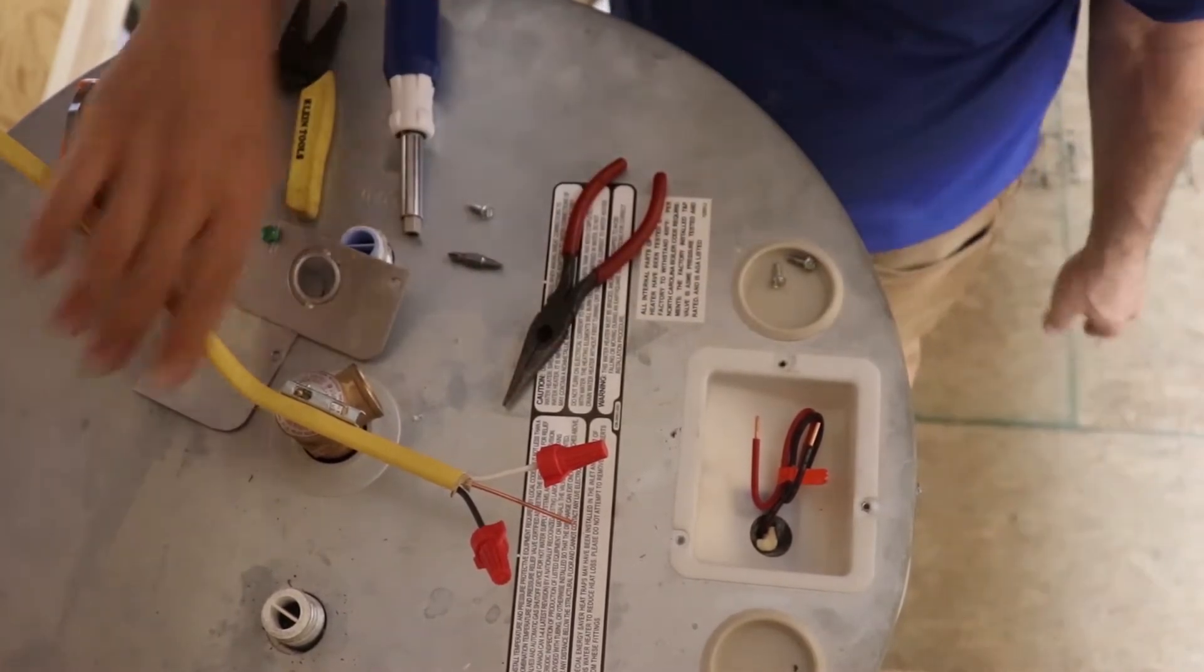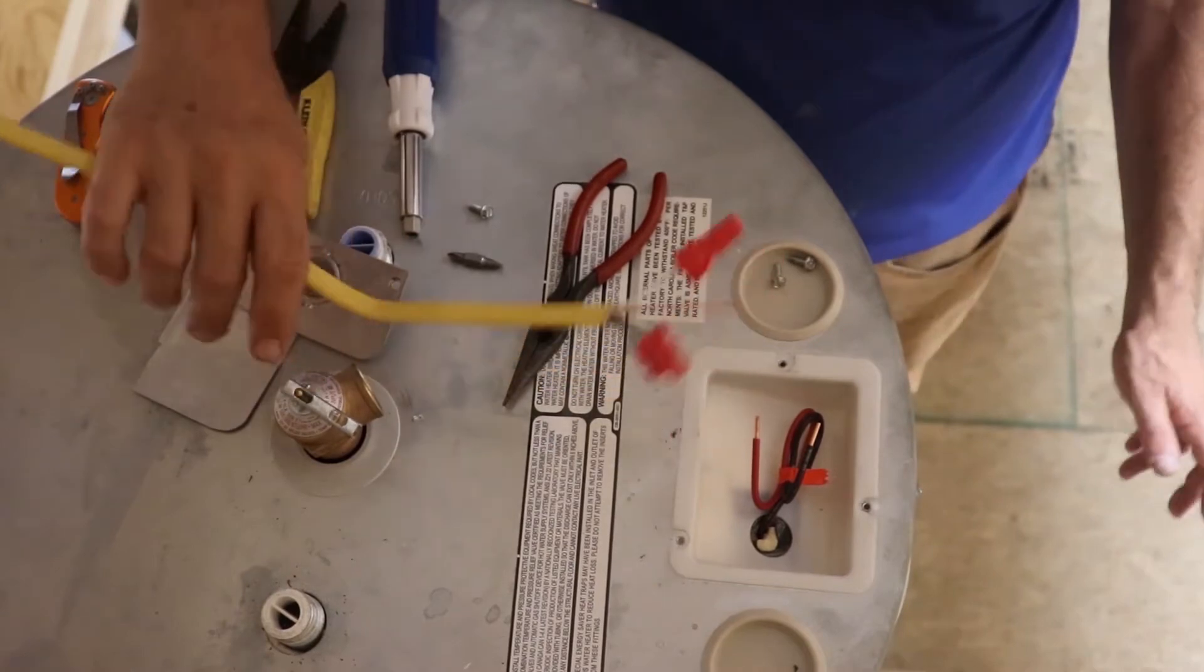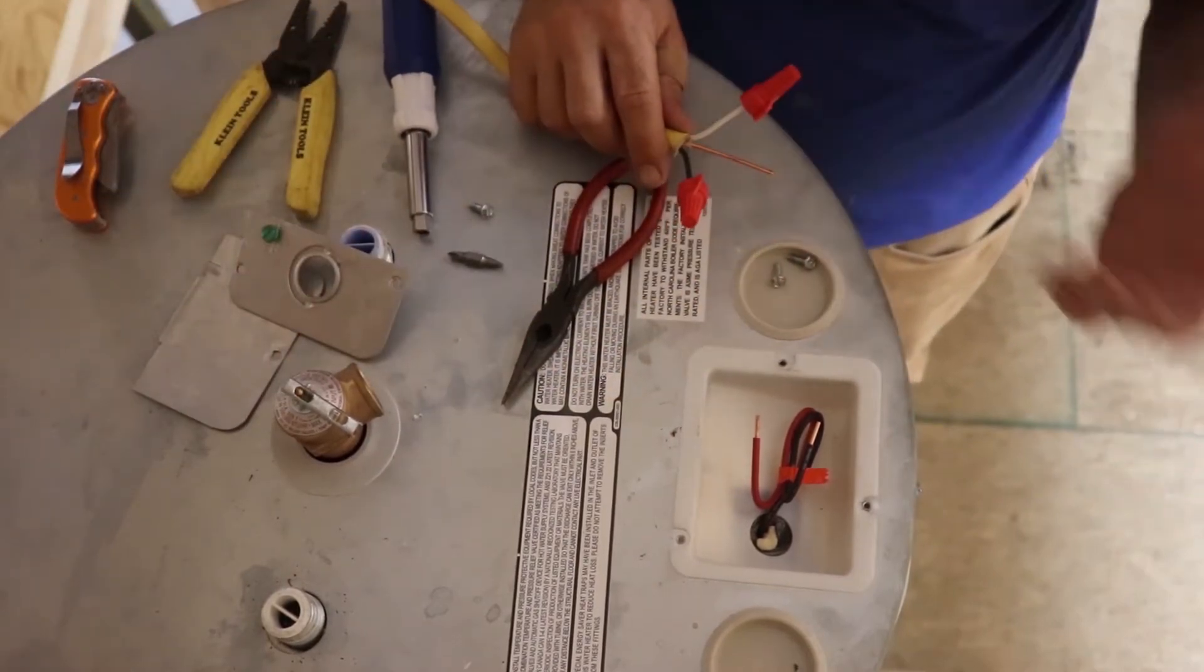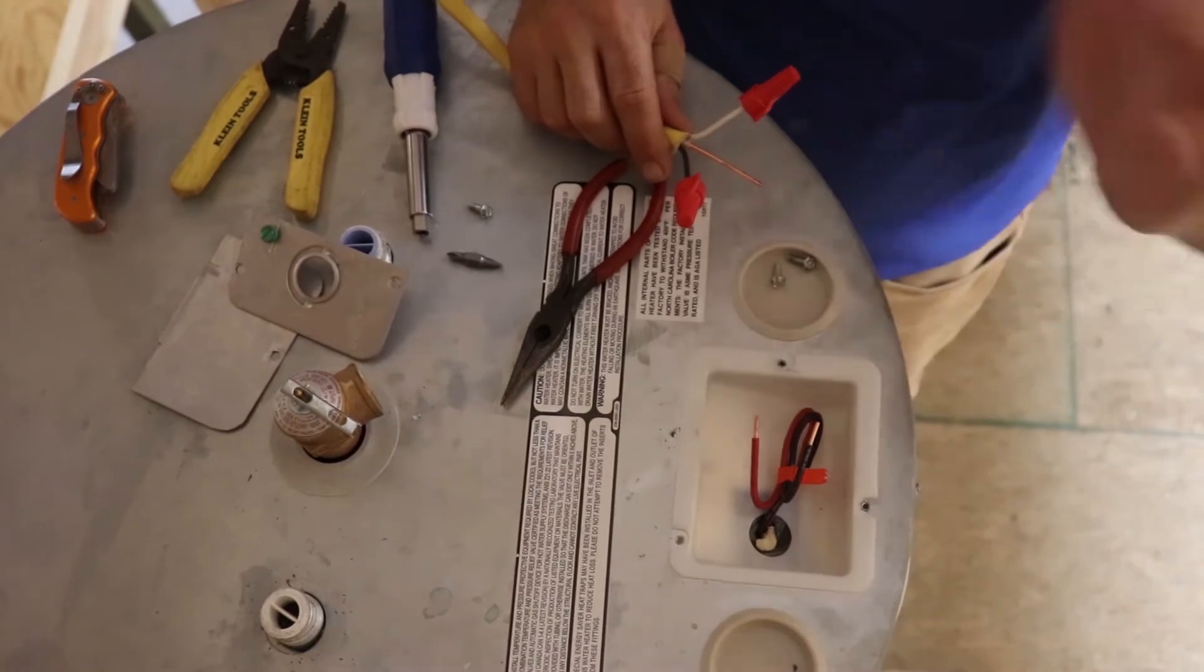Before you mess with anything, make sure the breakers off to this, to your water heater. It will be labeled in the box. If it's not, turn the whole thing off. Shut the whole thing down.